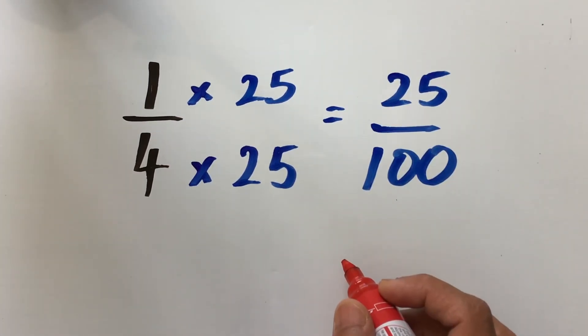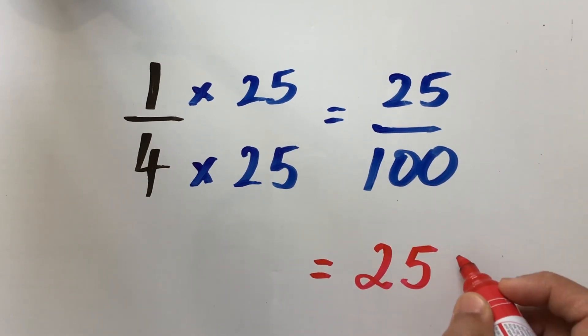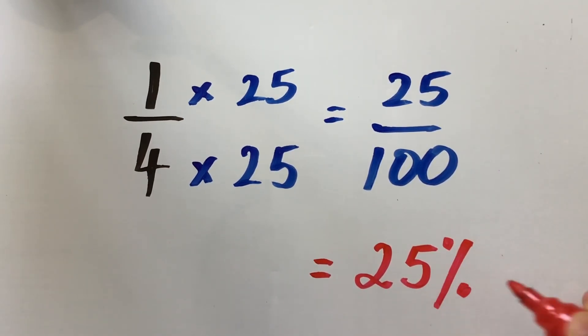Now, we know that 25 over 100 is as good as 25 percent. So we have already converted this quarter or one-fourth into percentage, which gives us 25 percent.